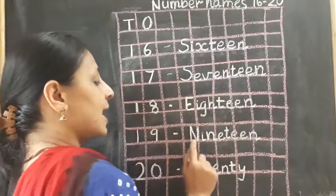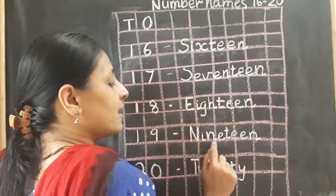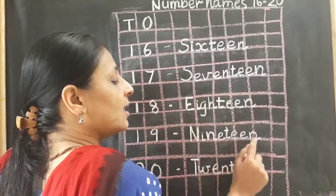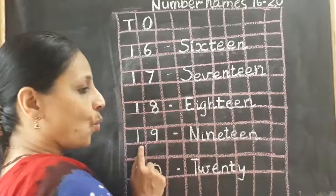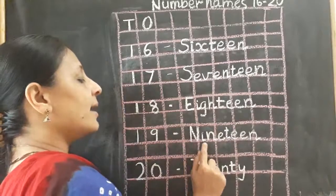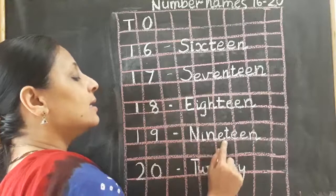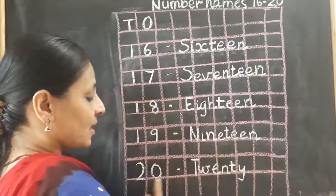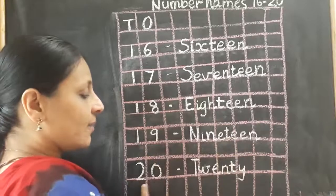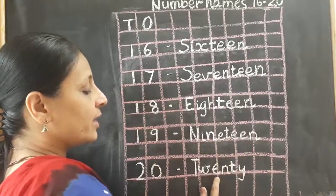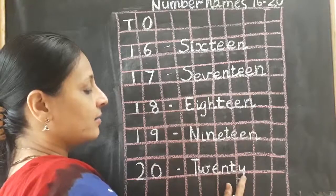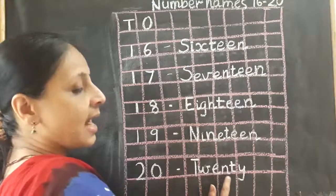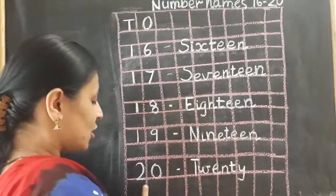Now 19: N, I, N, E, T, E, E, N. 19. Once again: N, I, N, E, T, E, E, N. 19. Now 20: T, W, E, N, T, Y. 20. Once again: T, W, E, N, T, Y. 20.